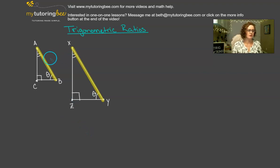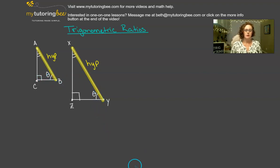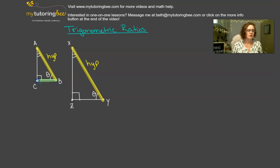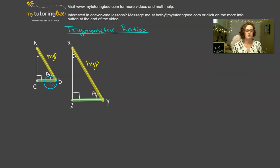Let's go ahead and label that — I'm just going to abbreviate it HYP. Now in relationship to the angle theta, again we're talking about angle B or angle Y. If we are looking at the adjacent side of the triangle, we are looking at that other length of the triangle that creates that angle theta. We already have the hypotenuse, and the other side of that triangle that creates the angle of theta — for this triangle it's ZY, and for this triangle it's CB — we are calling this the adjacent side.